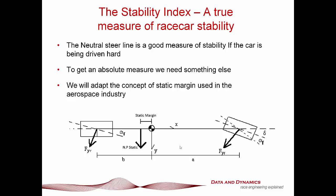My apologies to viewers on the ChassisSim YouTube channel who are already familiar with the stability index — I need to review this so that newer viewers know what I'm actually talking about. What the stability index measures is effectively the moment arm between the center of the lateral forces — which is often referred to as the neutral point. The distance between the center of the lateral forces and that point is the neutral point, and the distance between that and the center of gravity is called the static margin.